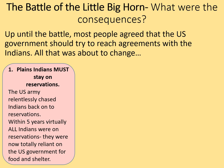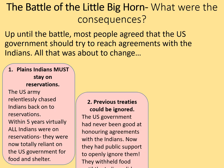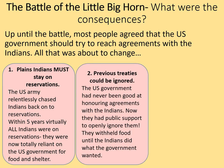The Indians were now totally reliant on the US government for food and shelter. The second outcome is that previous treaties could now be basically ignored at will by the US government. The US government had never been good at honouring agreements with the Indians, but now they had public support to openly ignore them. They withheld food until the Indians did what the government wanted.